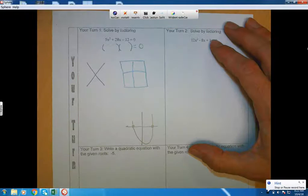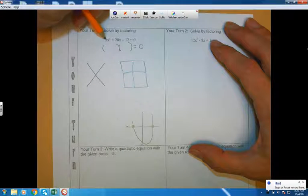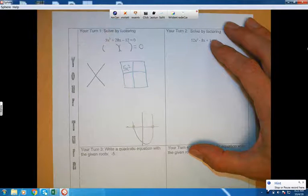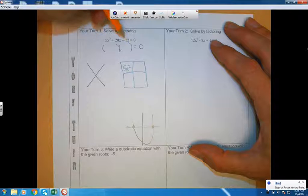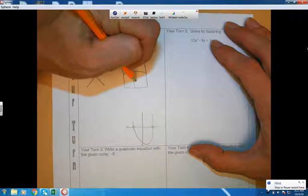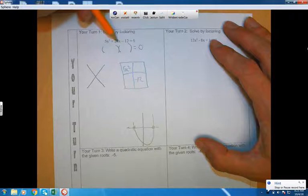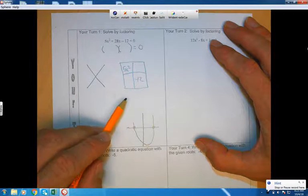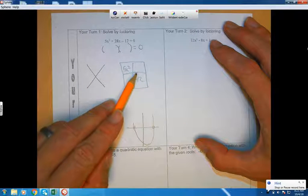The way the X-Box works is you take whatever the squared term is, so in this case it's 5x squared, and you put it in the top left. You take whatever the number by itself at the end is, and you put that in the bottom right corner. So negative 12 will go right here. And you take the x term, so like the 28x, and you put the x term in this spot right here.